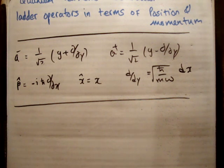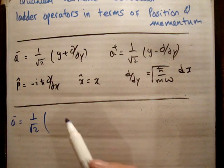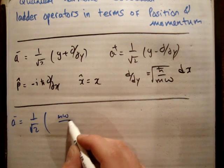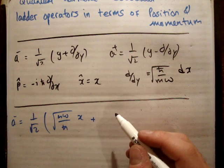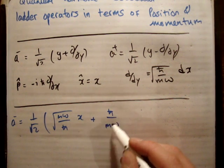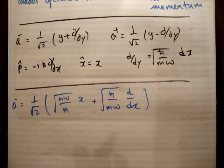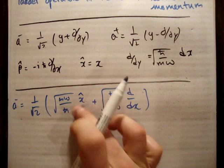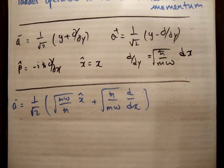Let's look at a⁻. If you plug back in what y is and what d/dy is, we get: 1 over root 2 times √(mω/ℏ) x plus √(ℏ/mω) ∂/∂x. Now we want to get position x̂ on its own, so we need to pull out the factor √(mω/ℏ).